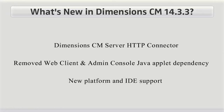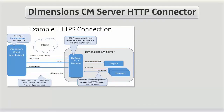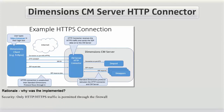The third theme is new platform and IDE support. The HTTP connector allows clients and agents to connect to a Dimensions CM Server using the HTTP or HTTPS network protocols instead of the default standard Dimensions protocol, or SDP. For some organizations, any non-HTTP traffic contravenes security policies, therefore SDP and SSDP connectivity would not be permitted.